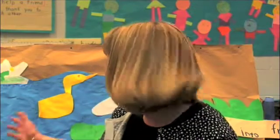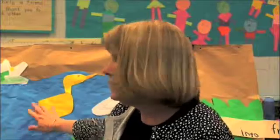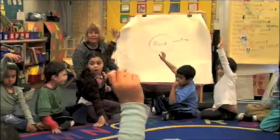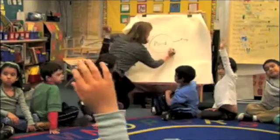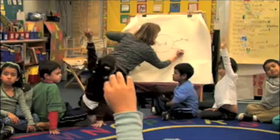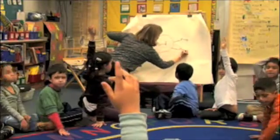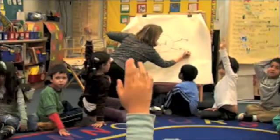We made pond murals. And in thinking about the pond, we thought about the parts of the pond. We used the think blocks to name each of the things that we saw on the mural. As they saw something on the mural and named it, I would write it on a web that I was making.